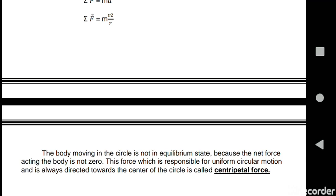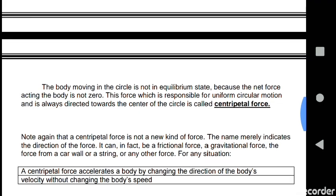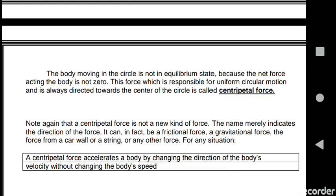This force which is responsible for uniform circular motion is always directed towards the center of the circle. This is called centripetal force. Note again that a centripetal force is not a new kind of force. The name merely indicates the direction of the force. It can in fact be a frictional force or some kind of gravitational force, the force from a car wall or a string or any other force. A centripetal force accelerates a body by changing the direction of the body's velocity without changing the body's speed, so the body's speed will remain constant.